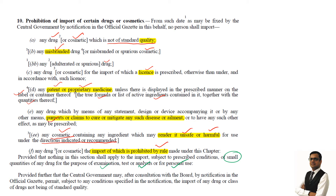Provided further that the central government, after consultation with the board by notification in the official Gazette, may permit subject to any condition specified in the notification the import of any drug or class of drug not being of standard quality. So if there is an emergency and the government thinks that the drugs are not able to meet the standard quality but are still required in the interest of the nation, they can go ahead and import that particular drug.